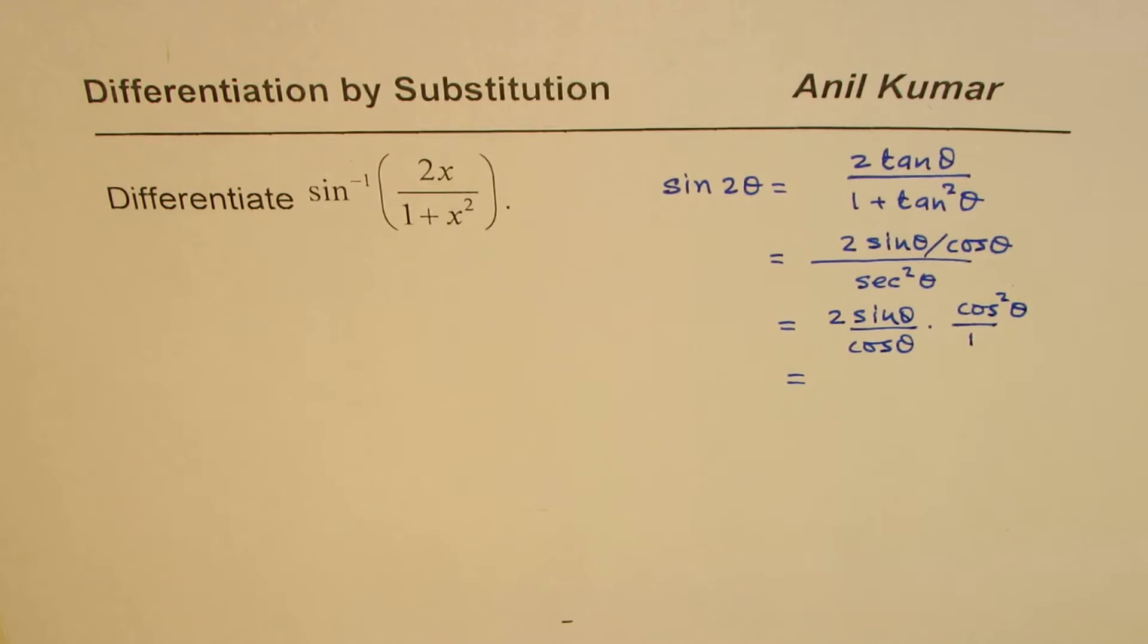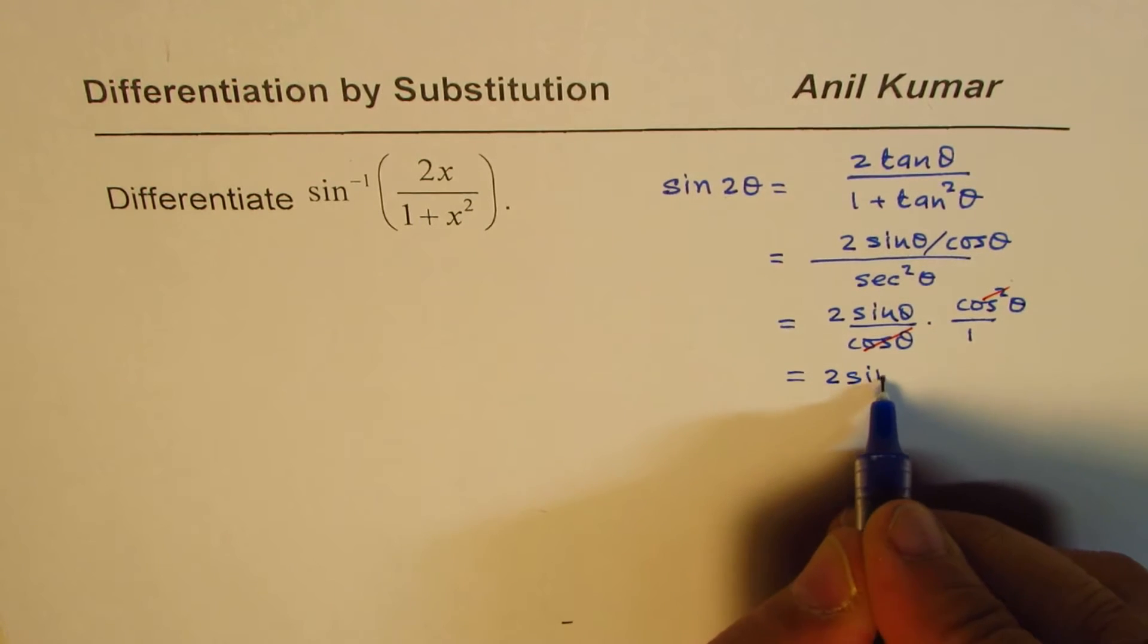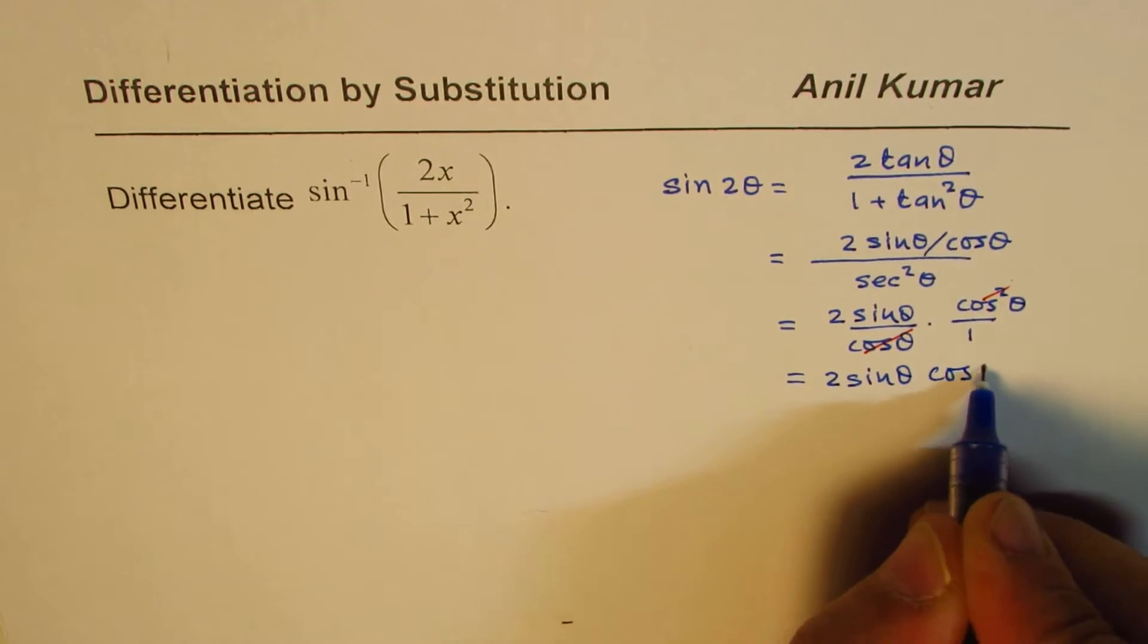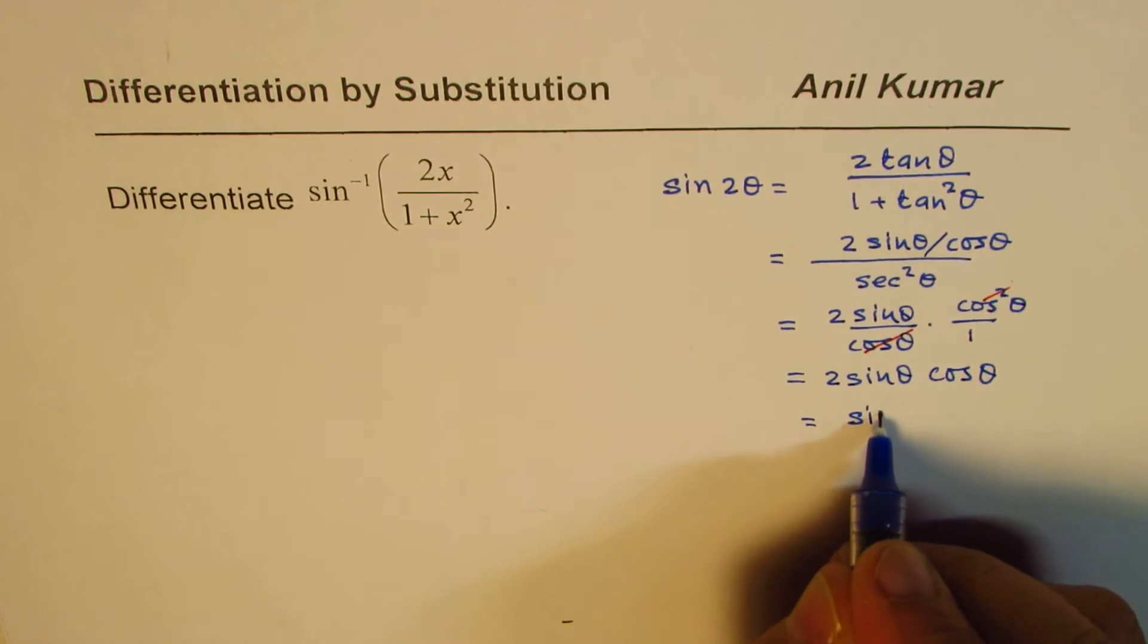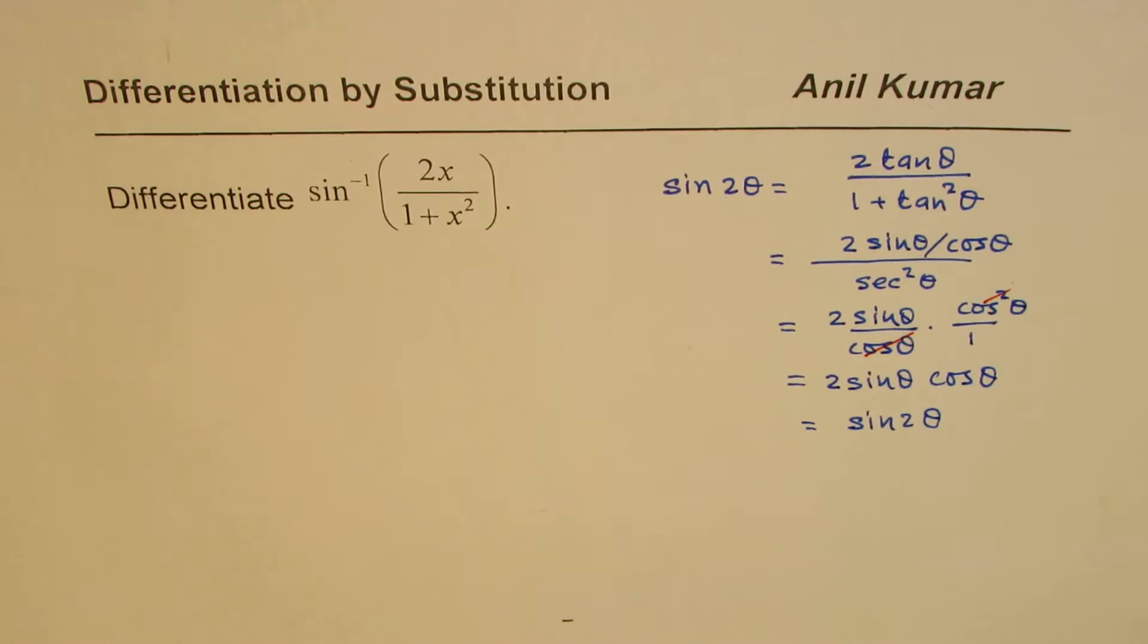In this particular expression, cos square theta will cancel, and what you're left with is 2 sine theta cos theta, which equals sine 2 theta. So that is the trigonometry part which you should know.